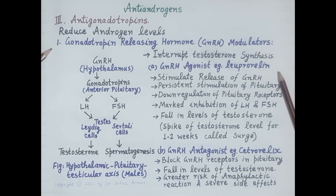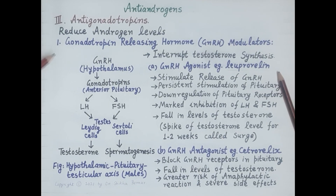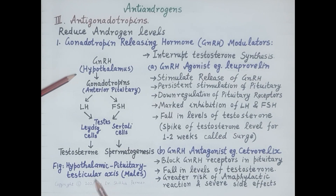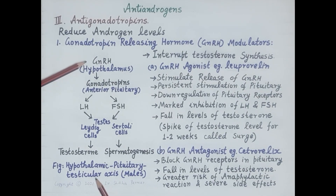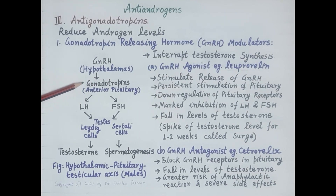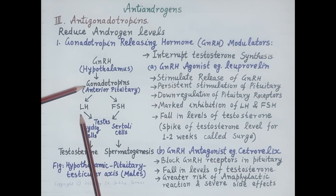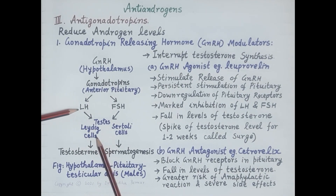The first type of anti-gonadotrophins are gonadotropin releasing hormone modulators, which interrupt synthesis of testosterone. The first subtype is GnRH agonists, for example leuprorelin. The hypothalamus produces GnRH, which stimulates the anterior pituitary to produce gonadotropins. One of the gonadotropins — luteinizing hormone — stimulates Leydig cells of the testes to produce testosterone.